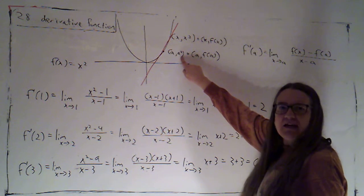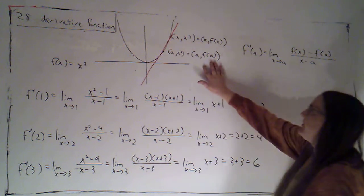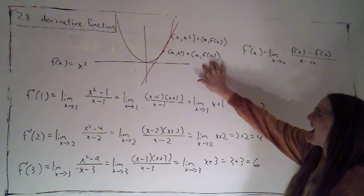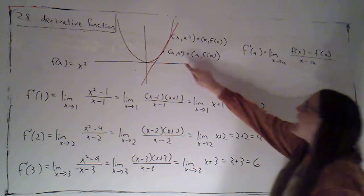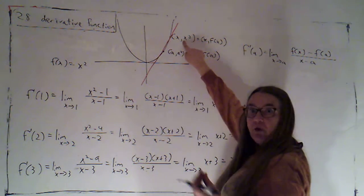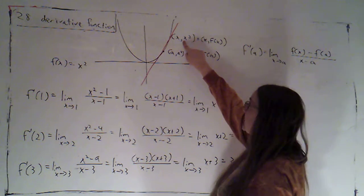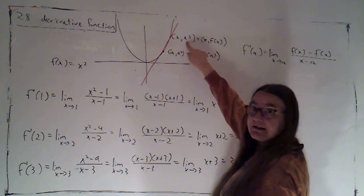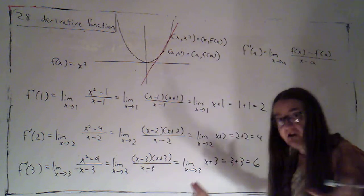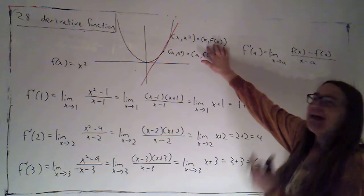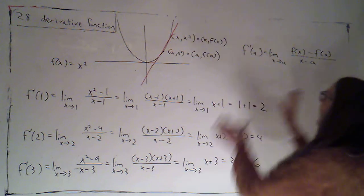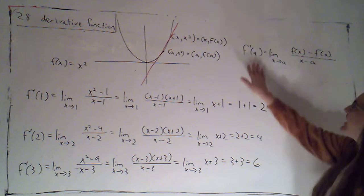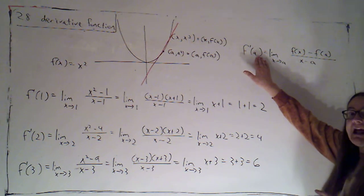The point of tangency we're saying is a, and then of course the y value would be a squared. An even more generic version would be just f of a. And then for our nearby point we label that with the variable x. So for this particular function it would be x, x squared. The very generic version of that would be x, f of x.